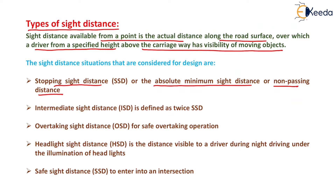Next is the intermediate side distance, which is generally provided when it is impossible to provide the overtaking side distance, and it is generally two times the stopping side distance.